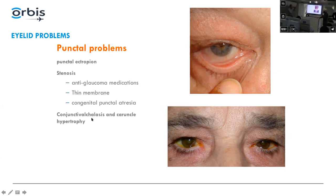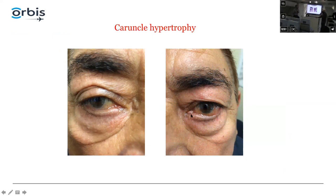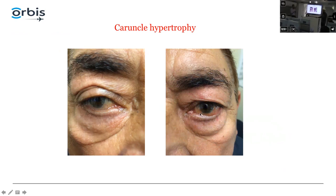Some patients have caruncal hypertrophy — a large caruncle blocking tears from getting into the punctum. This is an important and often missed cause of tearing. Always look at the medial canthus to see if something is blocking. I will trim or cut the caruncle to make more room. The same patient may also have conjunctival chalasis — extra conjunctival tissue — which can also be trimmed to decrease obstruction.